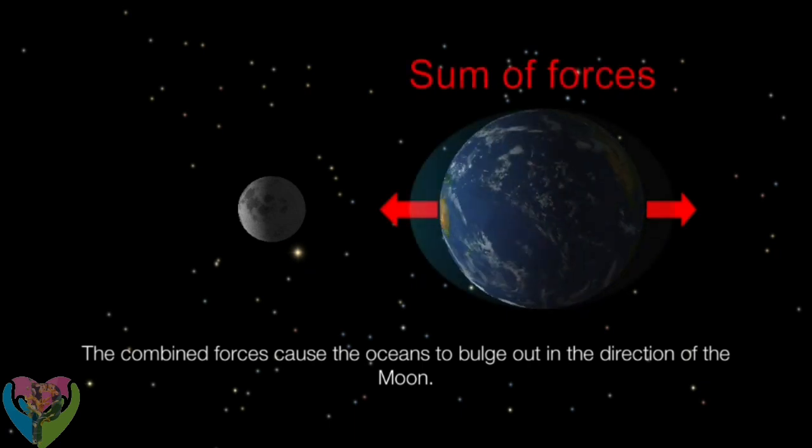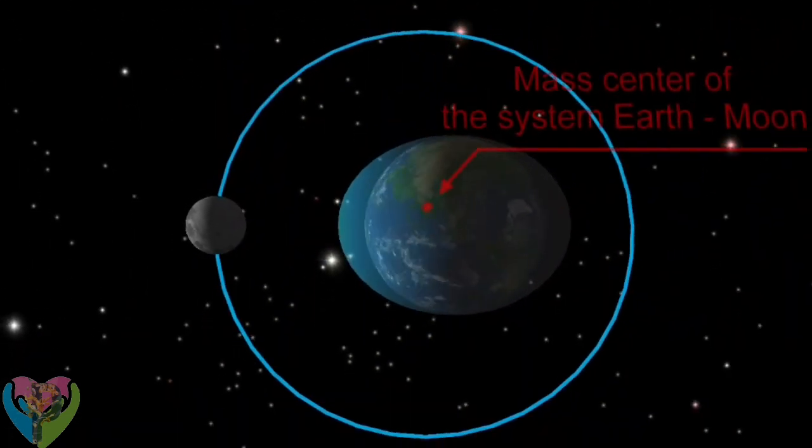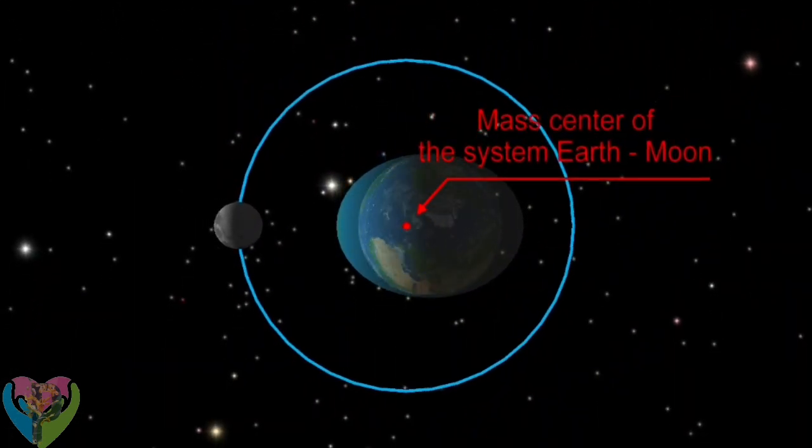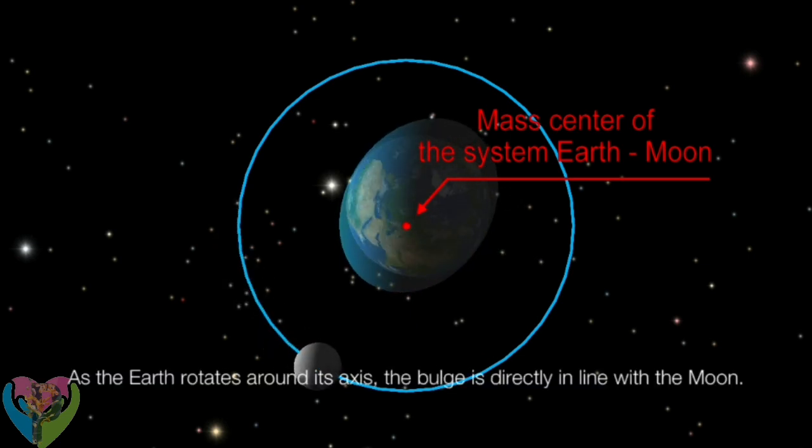The combined forces cause the oceans to bulge out in the direction of the Moon. As the Earth rotates around its axis, the bulge is directly in line with the Moon.